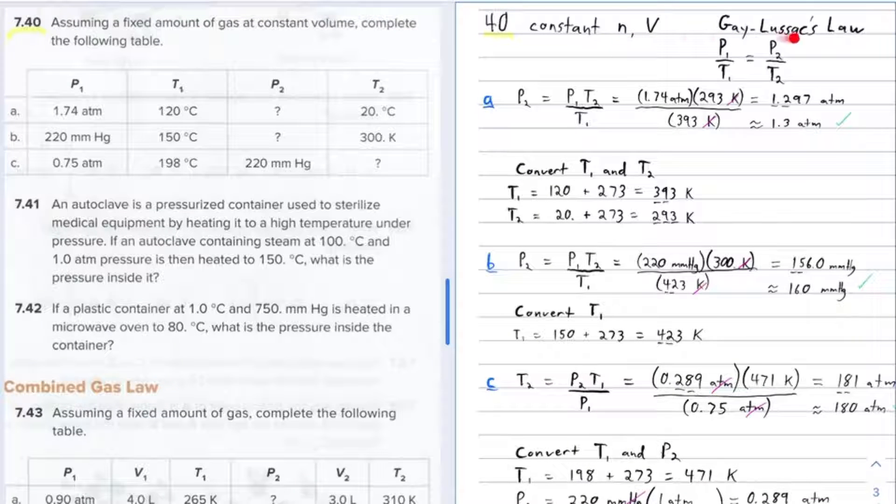Number 40. Assuming a fixed amount of gas at constant volume, complete the following table. So this time you've got constant moles and constant volume. That's a Gay-Lussac's law situation, and here's the mathematical form of it. And we have three problems to do.